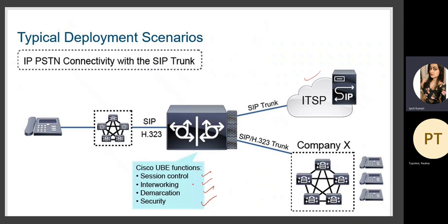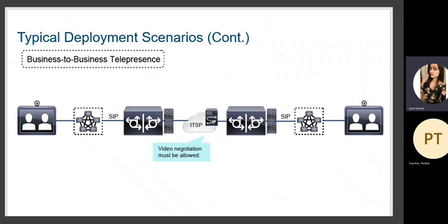CUBE can perform session control and interworking between different sites with different protocols or trunks configured, as well as demarcation and security. For IP/PSTN connectivity with a SIP trunk, and for business-to-business telepresence where video negotiation is used, CUBE can allow or block video negotiation. In a B2B telepresence scenario, ITSP communication runs between two sites with CUBE devices on both ends managing video negotiation.